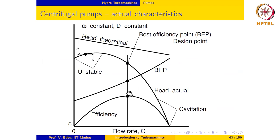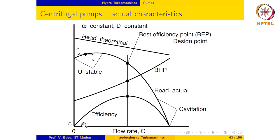The point where the efficiency is a maximum is the design point — the operating condition for which the pump impeller and dimensions are designed. For a given omega and impeller diameter, this is the design operating point at which you get the maximum efficiency. Efficiency falls off on both sides of the design point.